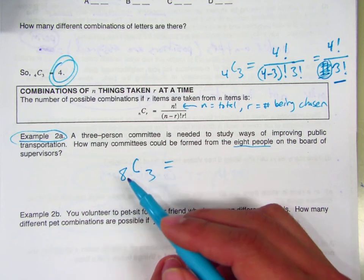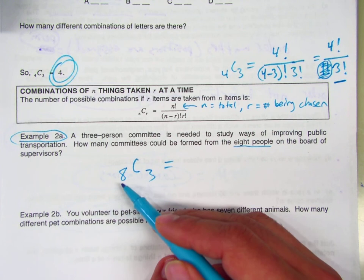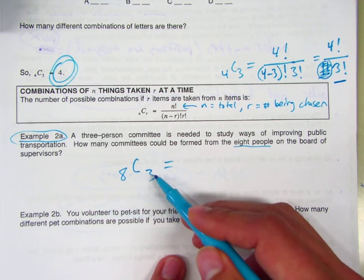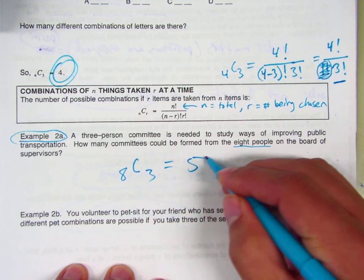And the way you would read this, by the way, is eight choose three, which kind of makes sense because it's really saying we have eight total people and we're choosing three of them. What is it? Fifty-six.